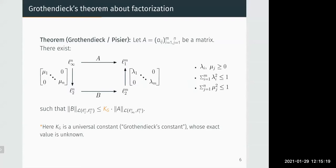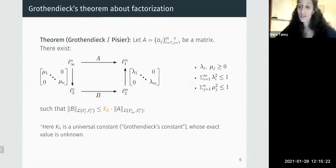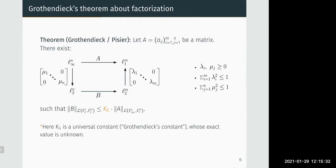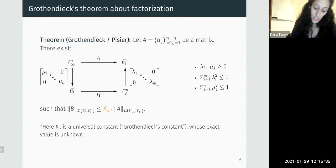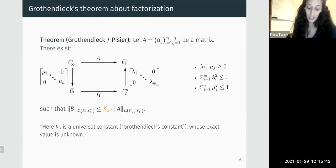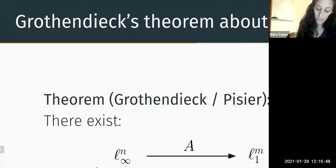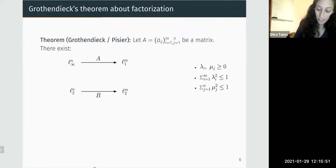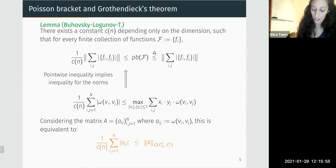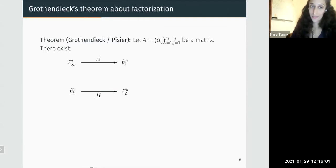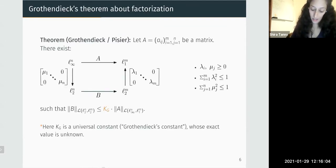How universal is K_G? Does it depend on M and N? No — that's the beauty of it. You can just write 3 there, it's just not going to be sharp. In using this theorem for our application, it was very important that K_G does not depend on the dimensions, because the dimensions of these spaces are the number of sets in the cover, and we don't want our constant to depend on the cover. That's a crucial point.